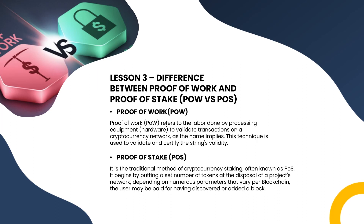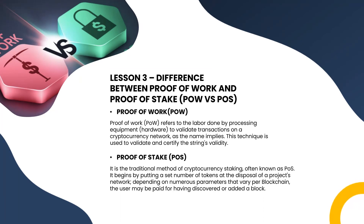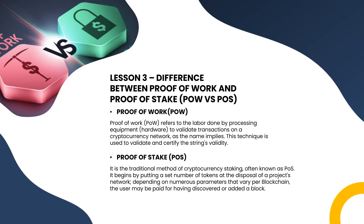Proof of Stake (PoS) is the traditional method of cryptocurrency staking. It begins by putting a set number of tokens at the disposal of a project's network. Depending on numerous parameters that vary per blockchain, the user may be rewarded for having discovered or added a block.